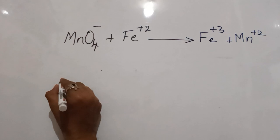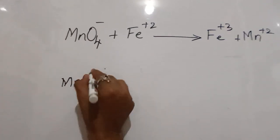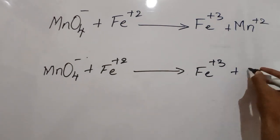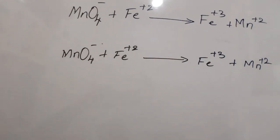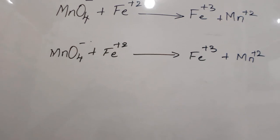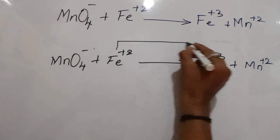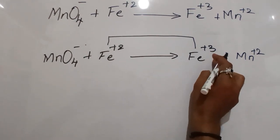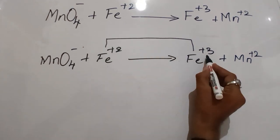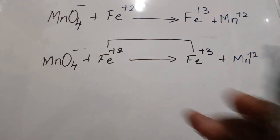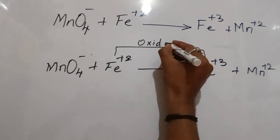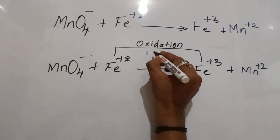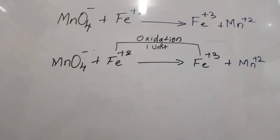The reaction is: MnO4- plus Fe2+, where Fe2+ is converted into Fe3+ plus Mn2+. As I mentioned earlier, an increase in oxidation number is termed as oxidation. Fe2+ is converted into Fe3+, meaning the charge increases by 1 unit — that is termed as oxidation.